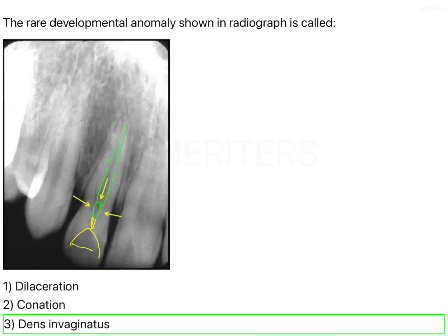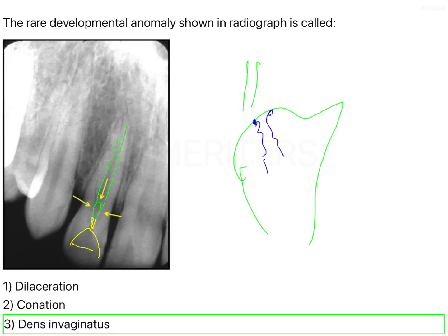What exactly happens in dens invaginatus is there is differential proliferation of your cells in the morpho-differentiation stage. Because of this differential proliferation, some of the inner enamel epithelial cells start proliferating downwards. So during the cap stage or bell stage, from one particular region the inner enamel epithelial cells start moving downwards. As a result, a completely new tooth is formed within the already pre-existing tooth germ. This is the exact pathogenesis of dens invaginatus.